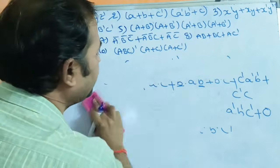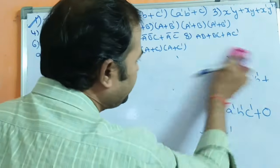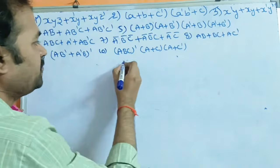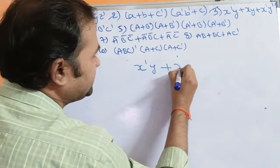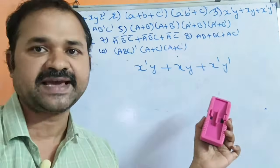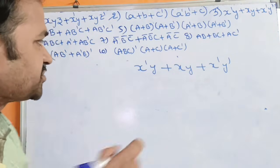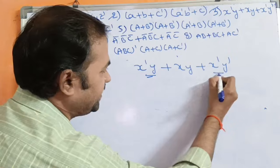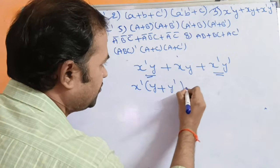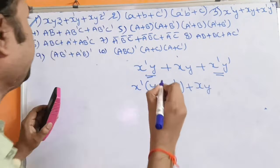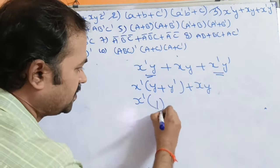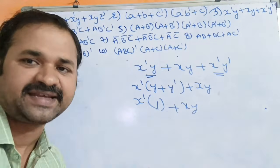If we are familiar with all boolean algebraic rules, we can solve any problem very easily. The third example is x'y + xy + x'y'. Observing the first and third terms, x' is common, giving x'(y + y') = x'·1 = x'.